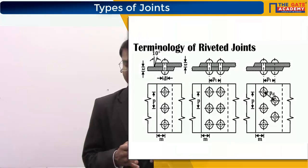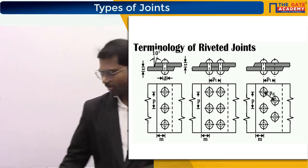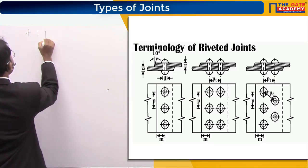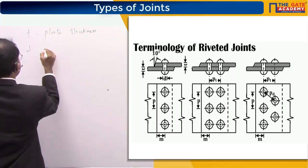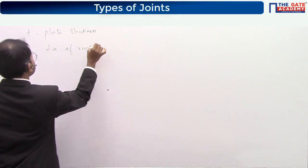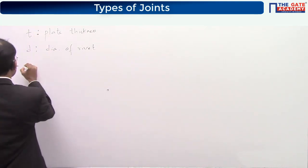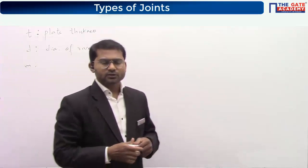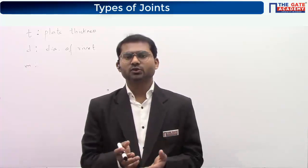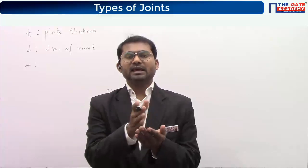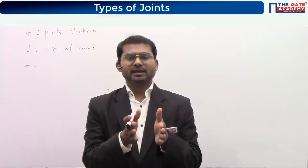Next is M, which is called margin. I hope you remember that in notebooks in school, we used to leave some gap from the left edge of the page before starting — we call that gap the margin. Same thing here: when joining two plates, the distance of the row of rivets from the edge of the plate is called margin, denoted by M.